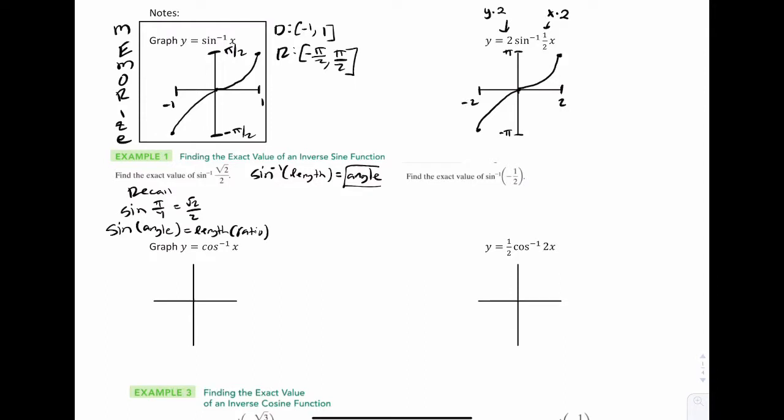So for all of these, your answer should be some type of angle. Now, if you're looking at this thing, sine inverse of √2/2, the issue is that √2/2 happens in two places on the circle, right? If you imagine your circle. √2/2 happens both in quadrant 1 and quadrant 2.